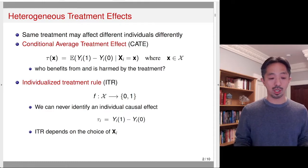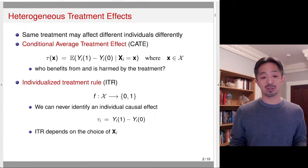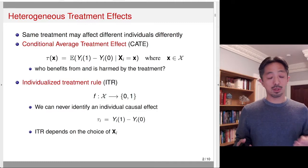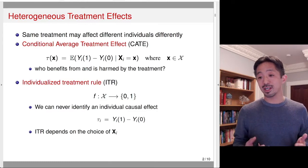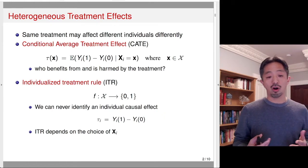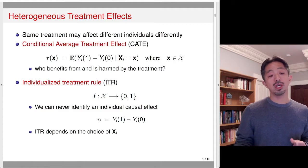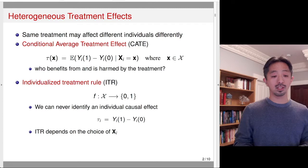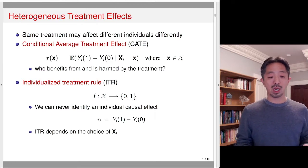More importantly, depending on the set of covariates you use to construct the ITR, you get different recommendations. It doesn't follow that just because you have more covariates, the ITR recommendation for any given individual is necessarily better than conditioning on fewer covariates. So that's a difficulty — the choice of x really determines what kind of ITR you get.